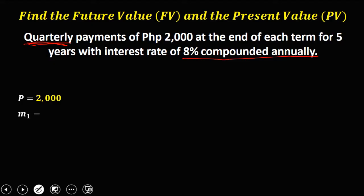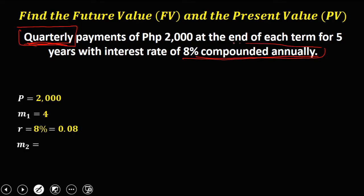M1 is the payment interval. Since payments are quarterly, that is 4 times in a year, so M1 is equal to 4. The rate is 8%, which converts to 0.08. M2 is the compounding period — compounded annually, so once in a year, M2 equals 1. The time is 5 years, so T equals 5.